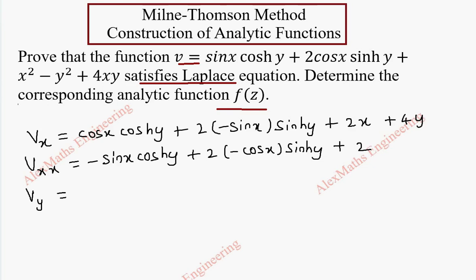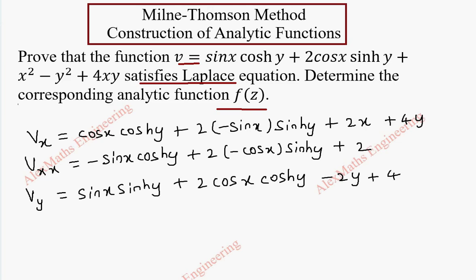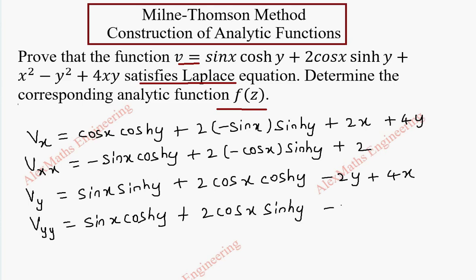Similarly, Vy: we get sin x is a constant and cosh y derivative is sinh y, plus 2 cos x is a constant, sinh y derivative is cosh y, and x square is 0, and minus y square is minus 2y, and plus 4x is a constant and y derivative is 1. Similarly, Vyy: this becomes sin x is a constant and sinh y becomes cosh y. Here, 2 cos x is a constant and this becomes sinh y and minus 2.